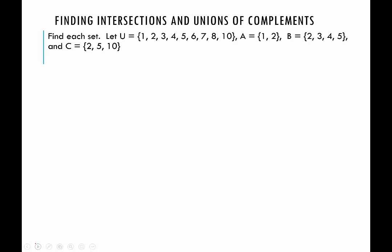We're going to be given this universe: 1, 2, 3, 4, 5, 6, 7, 8, and 10, and then we have sets A, B, and C defined as given. Here are our first two examples: we want to find A complement union C complement, and A complement intersect B complement union C complement.